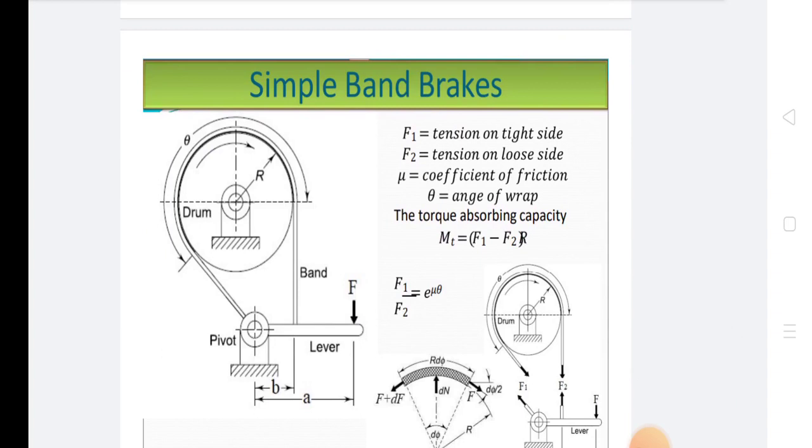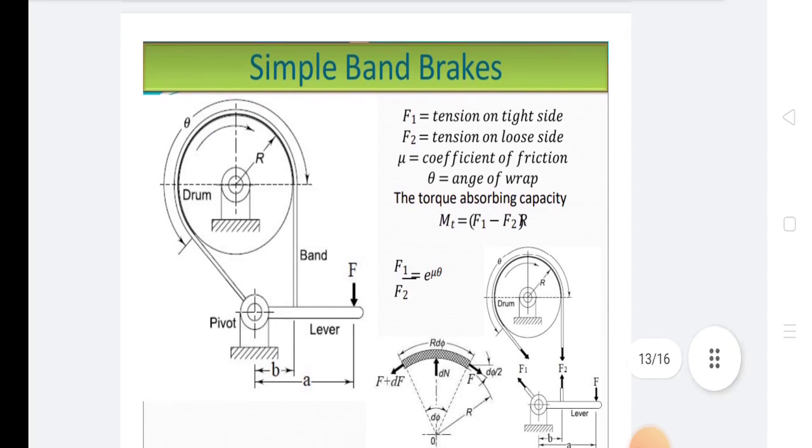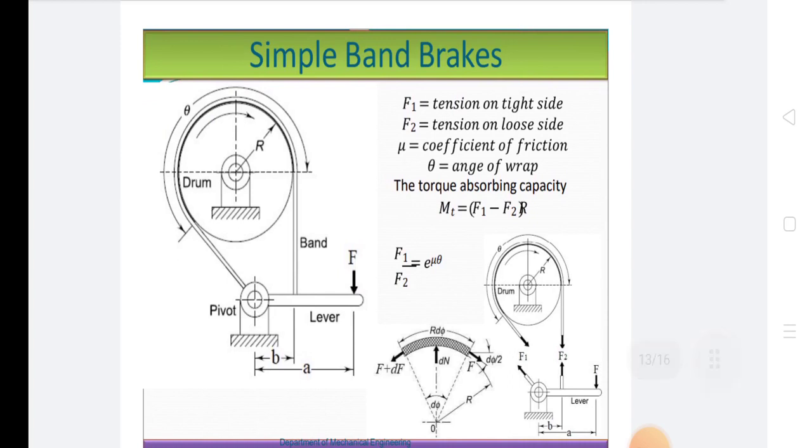This is the simple band brakes. In simple band brakes, band brakes consist of a flexible band which is wrapped partly around the rim of the drum. The flexible band is made up of leather, ropes, or sometimes steel lined with friction material. During the operation, the band is fixed and the drum rotates.